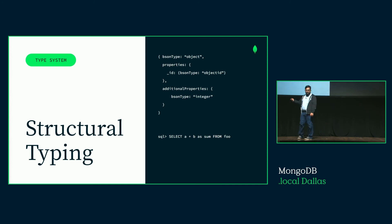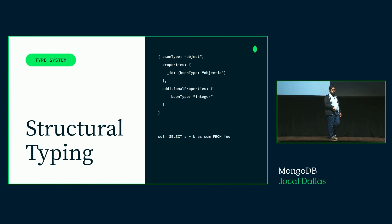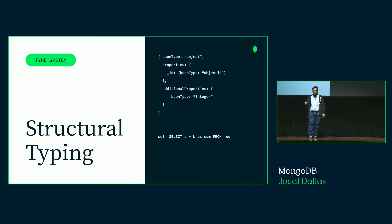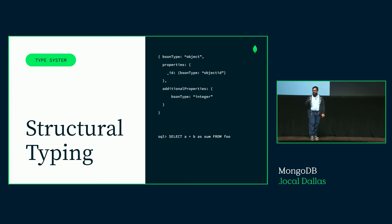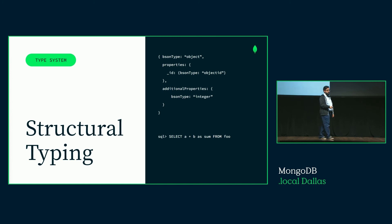Let's consider another example. In this case we have a JSON schema that describes a collection and the Atlas SQL query that's going to run against that collection. Despite the fact that we don't even know whether fields A and B exist, we can still compile the query and guarantee that it will not error out at runtime. This is a simple but very neat example, because it allows us to see the flexibility needed to work with the document model without sacrificing compile-time safety.